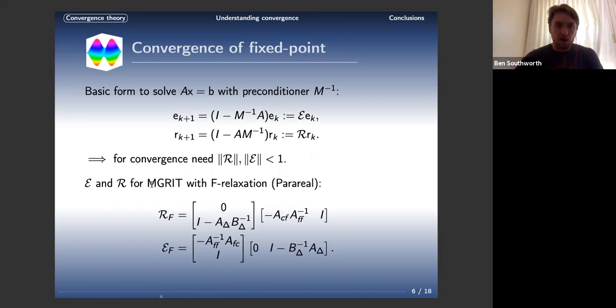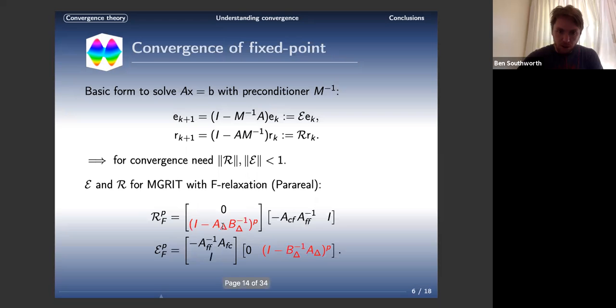You can work out what these matrices look like. For MGRIT with F-relaxation slash parareal, this is what they look like. It looks a little bit complicated, but it's not so bad. The outer product form is really useful. We have this column vector here and row vector here. Because what happens is when you iterate, when you apply this over and over, you take this piece - you take the right one times the left one, and R to the P looks like I minus A-delta inverse B-delta, A-delta B-delta inverse to the P times this other stuff.